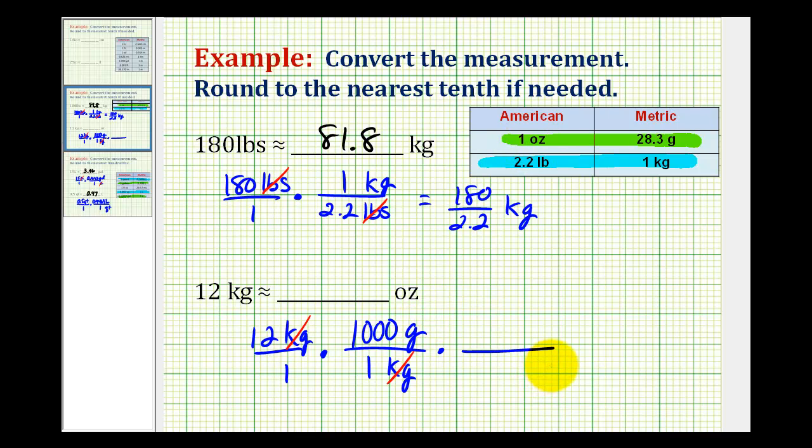So we'll put grams in the denominator, and ounces in the numerator, so that the grams simplify out, and again the conversion is 1 ounce is equal to 28.3 grams. The grams simplify out, and so we're left with 12 times 1,000 in the numerator, and 28.3 in our denominator.